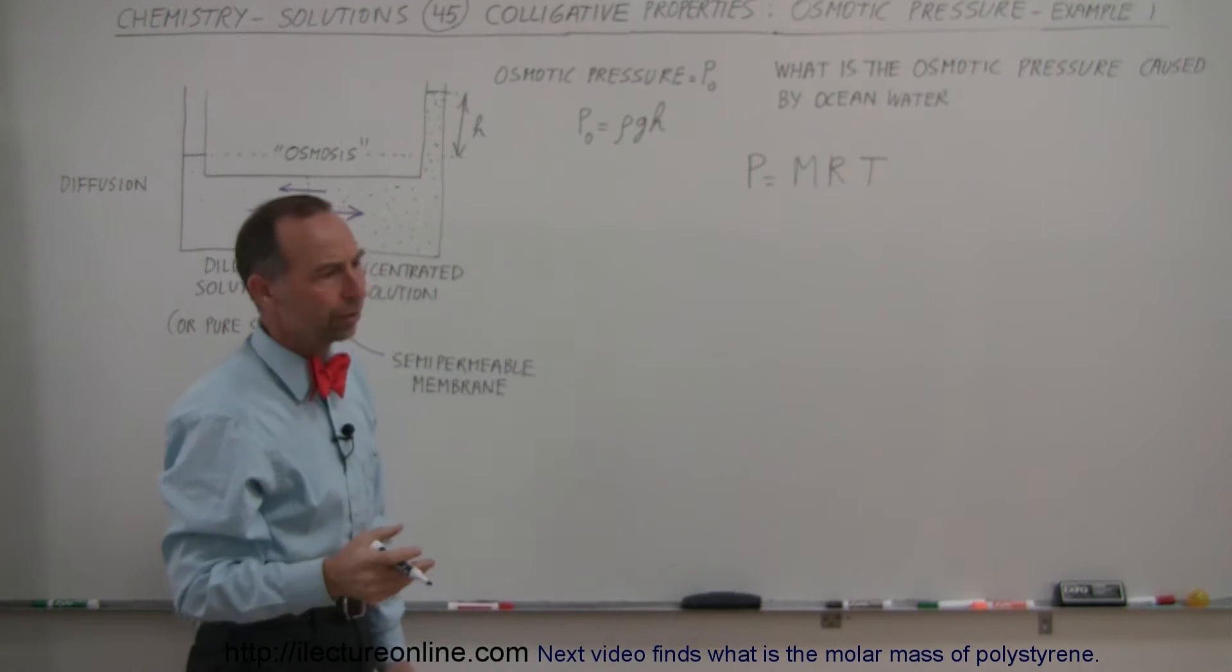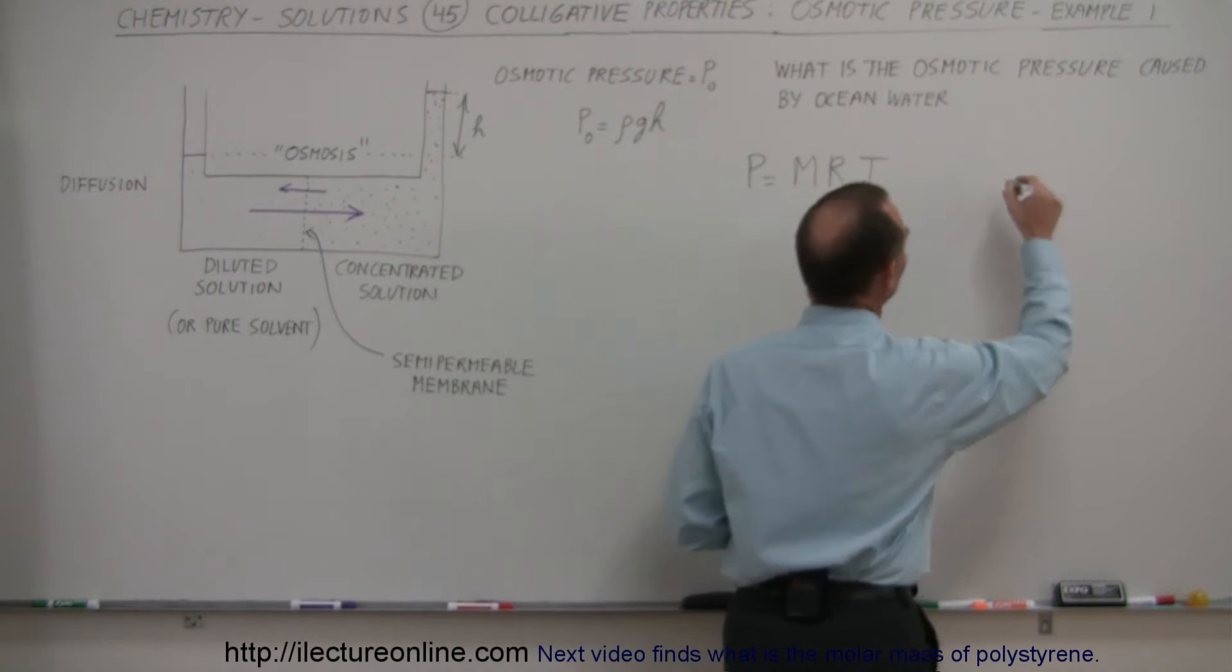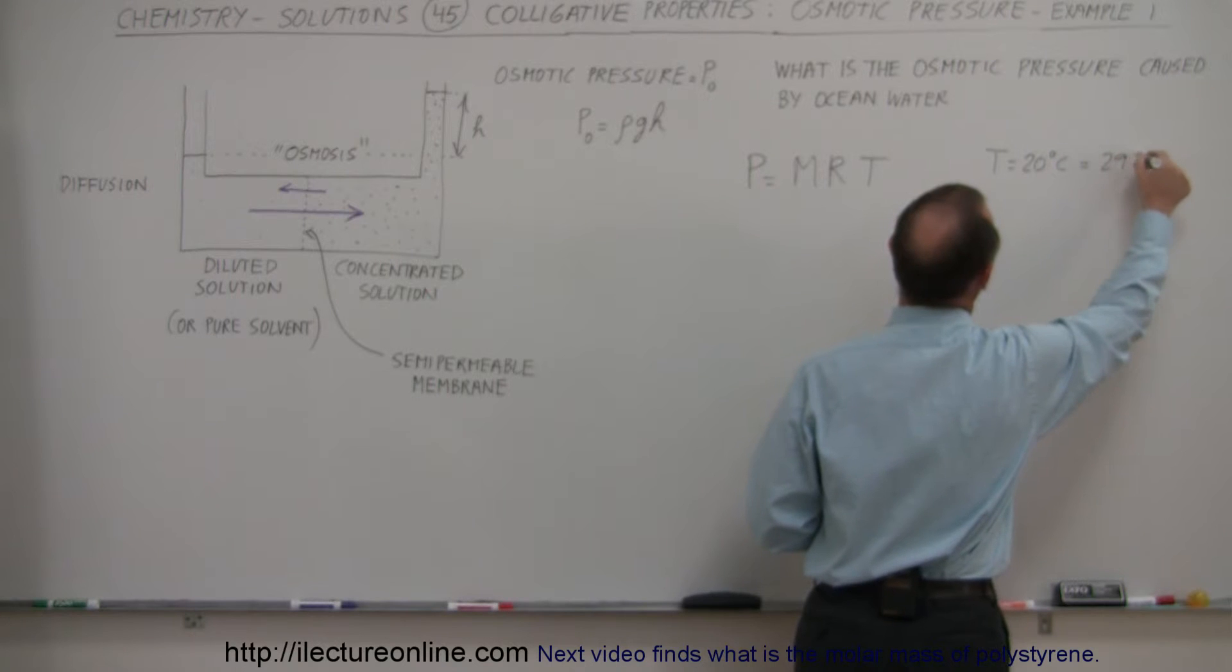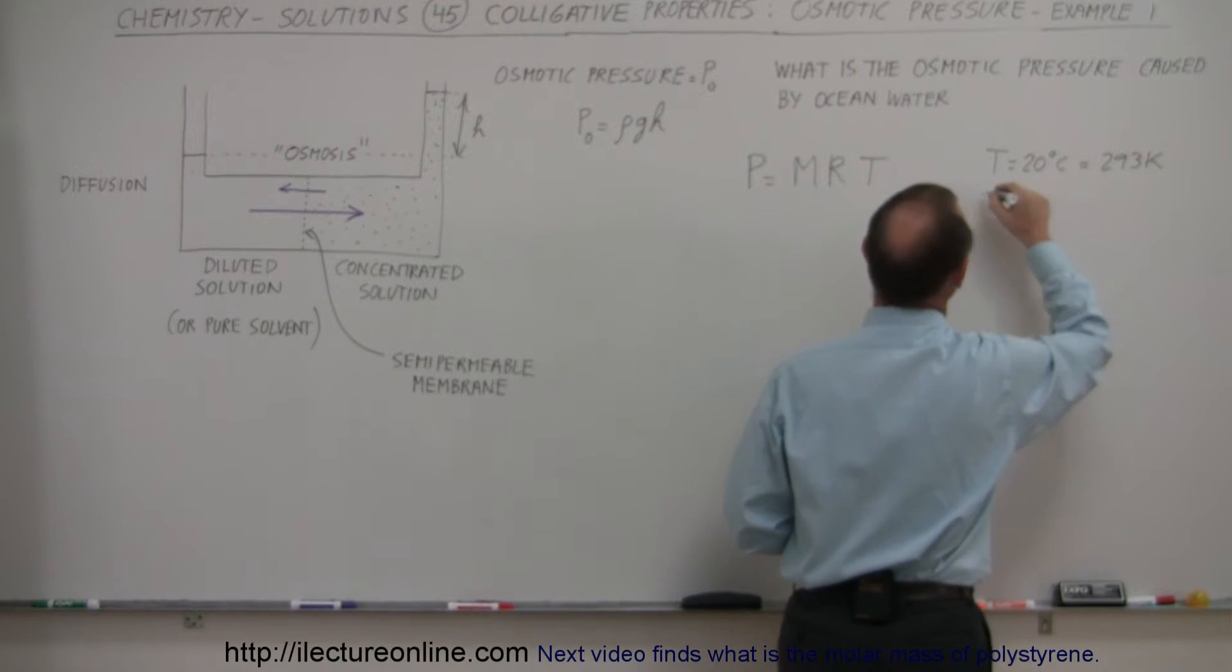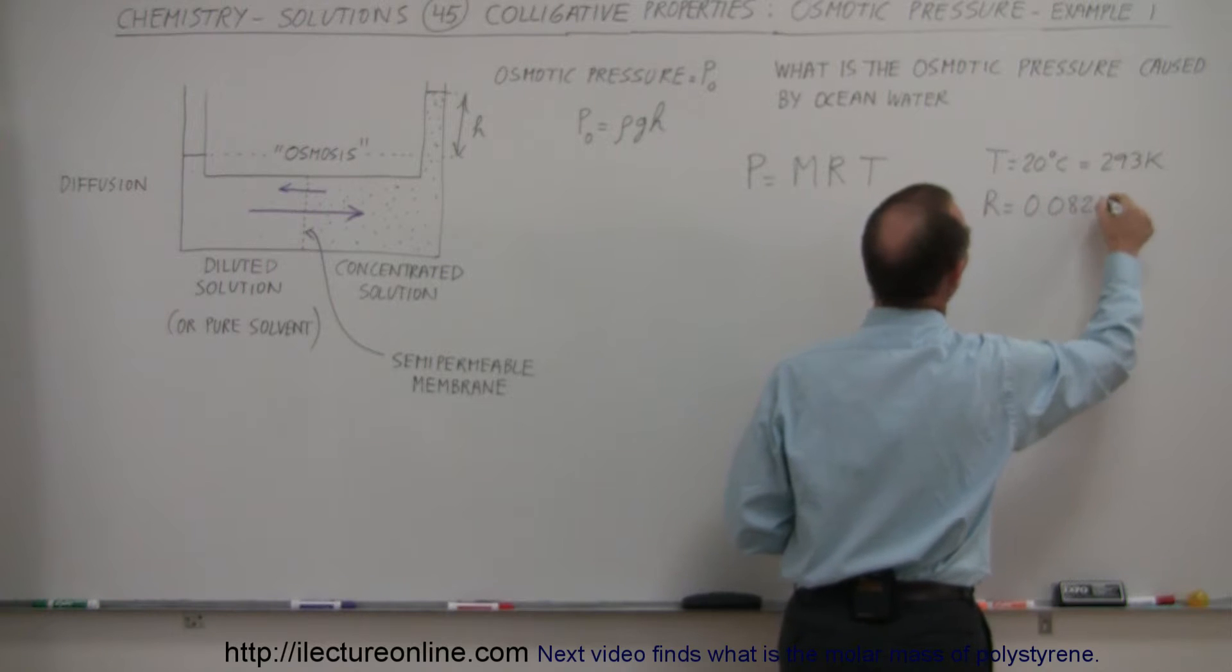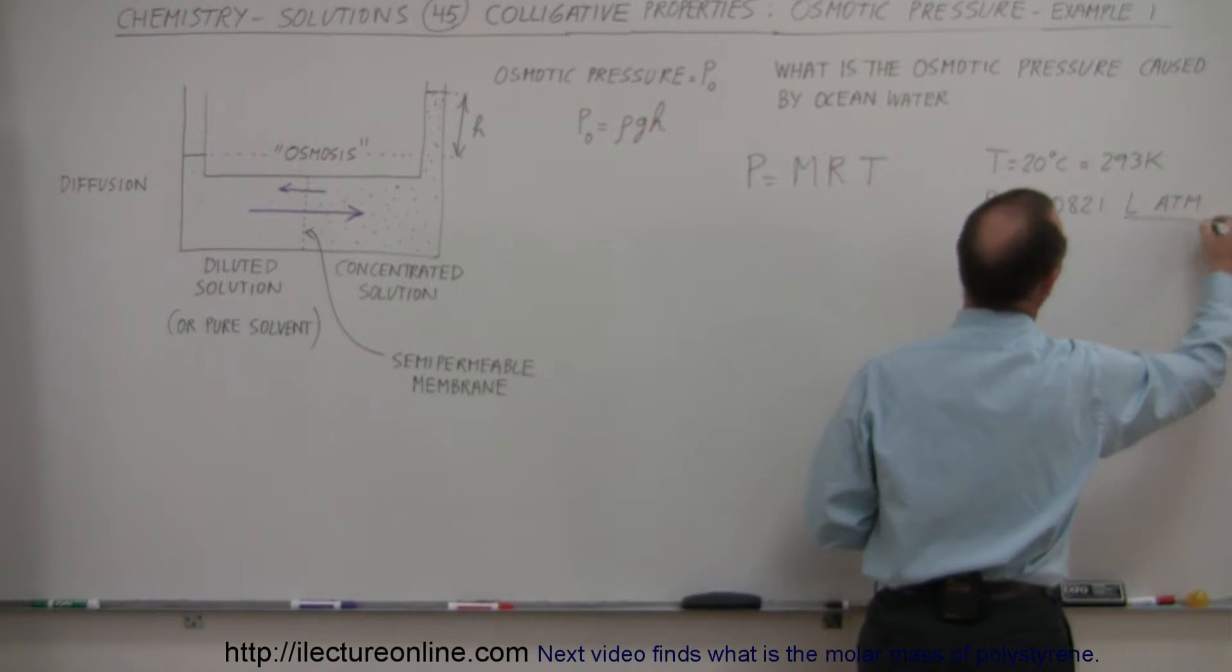So let's take ocean water in a desert area, maybe around 20 degrees centigrade. So let's say that the temperature is equal to 20 degrees centigrade, which is about 293 Kelvin. We also know that R is equal to 0.0821, that would be liter times atmospheres, divided by Kelvin times moles.